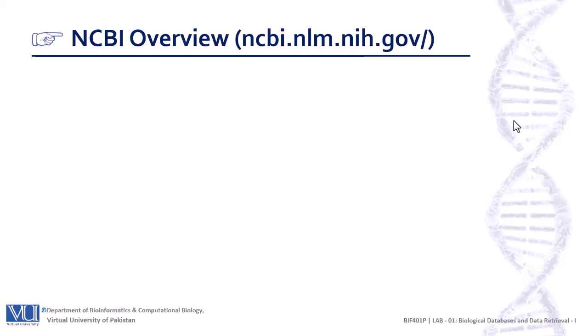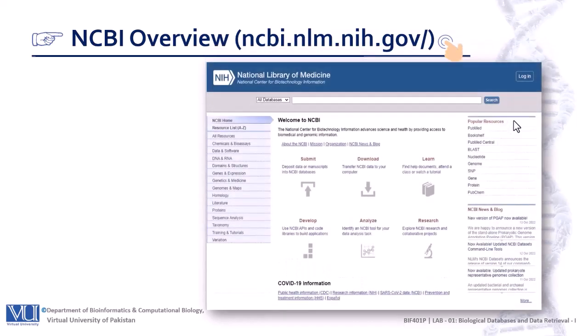Let's start on the main NCBI website. To get there, open your browser and type the NCBI address as you can see here. This is the main interface of the NCBI homepage. From the NCBI homepage, we can get any information about any sequence — it can be nucleotide or protein sequence of any organism like human, animal, or microorganism.